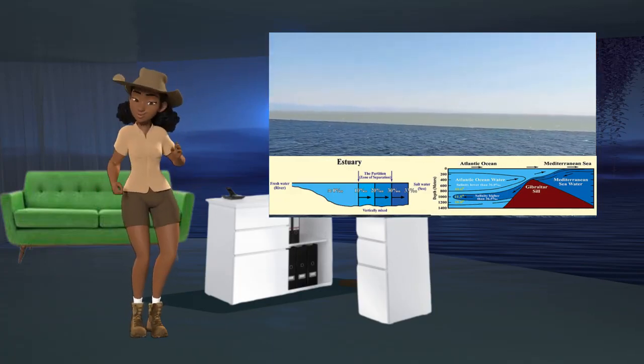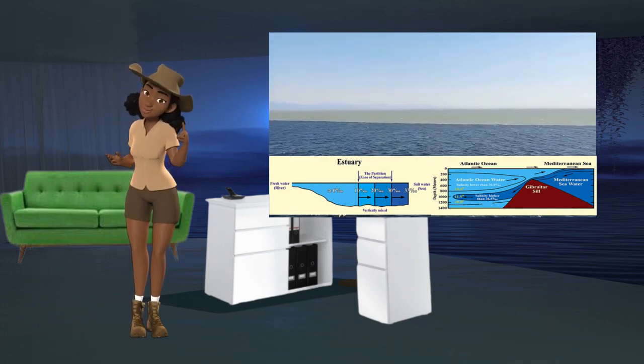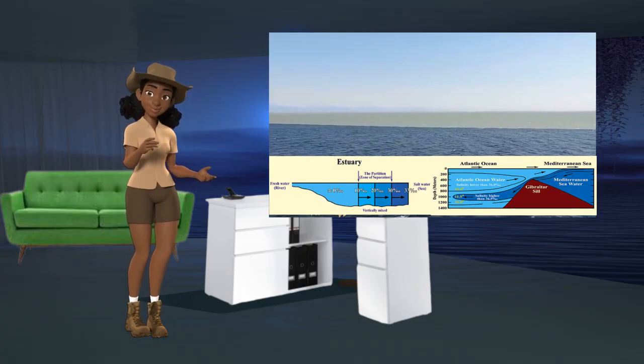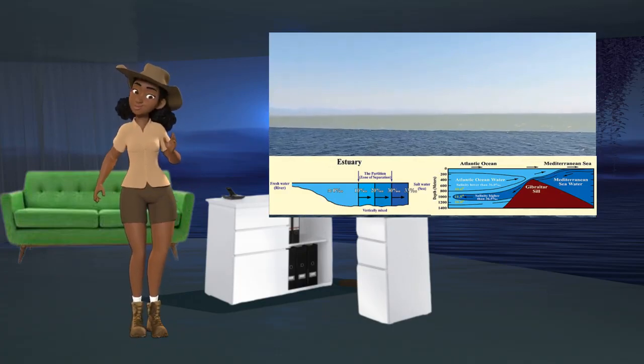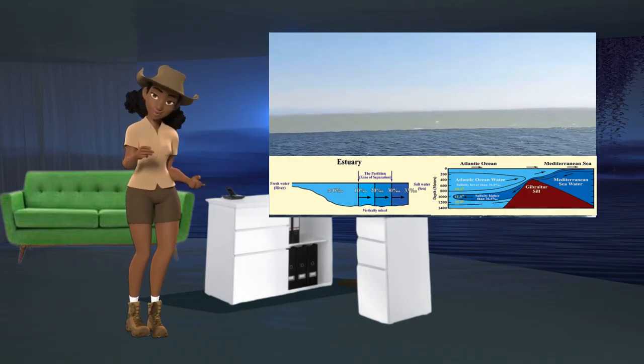It has been discovered that what distinguishes fresh water from salt water in estuaries is a pycnocline zone with a marked density discontinuity separating the two layers. This partition has a different salinity from the fresh water and from the salt water.